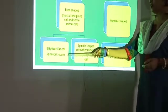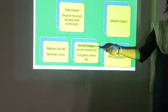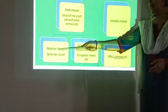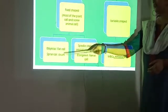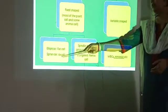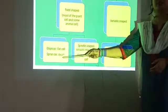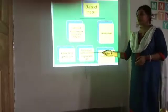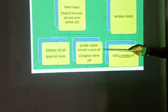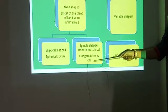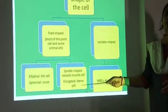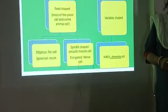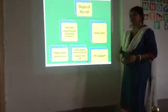Fixed shaped cells can be of different types. First, the elliptical type — for example, the fat cell. The spherical type — for example, the ovum. They can also be spindle shaped — the example is the smooth muscle cell. They can also be elongated — the example is the nerve cell or neuron. In addition, RBCs have a discoidal type of structure.